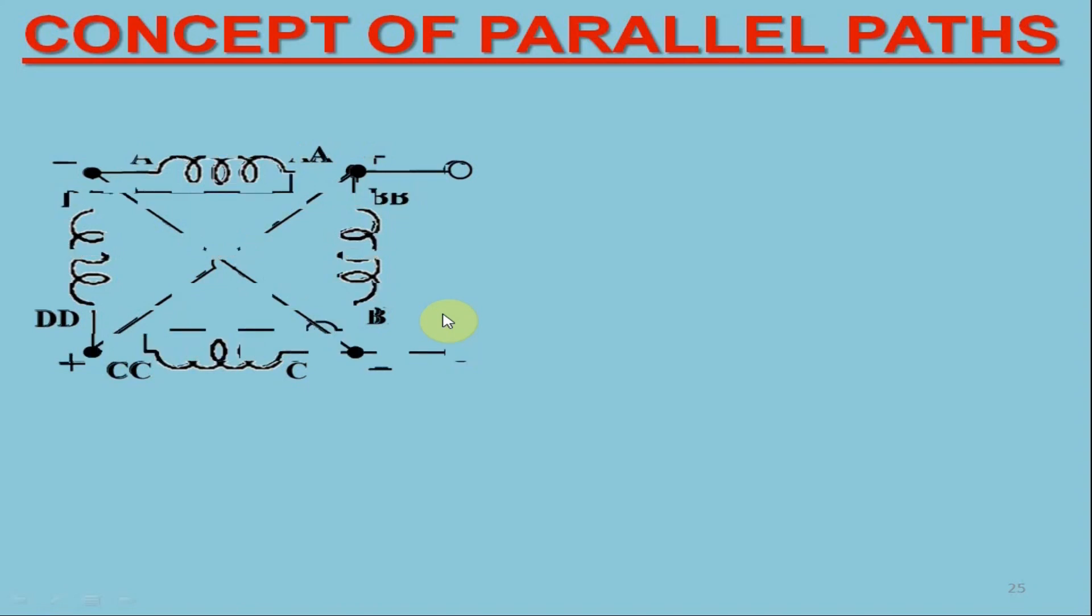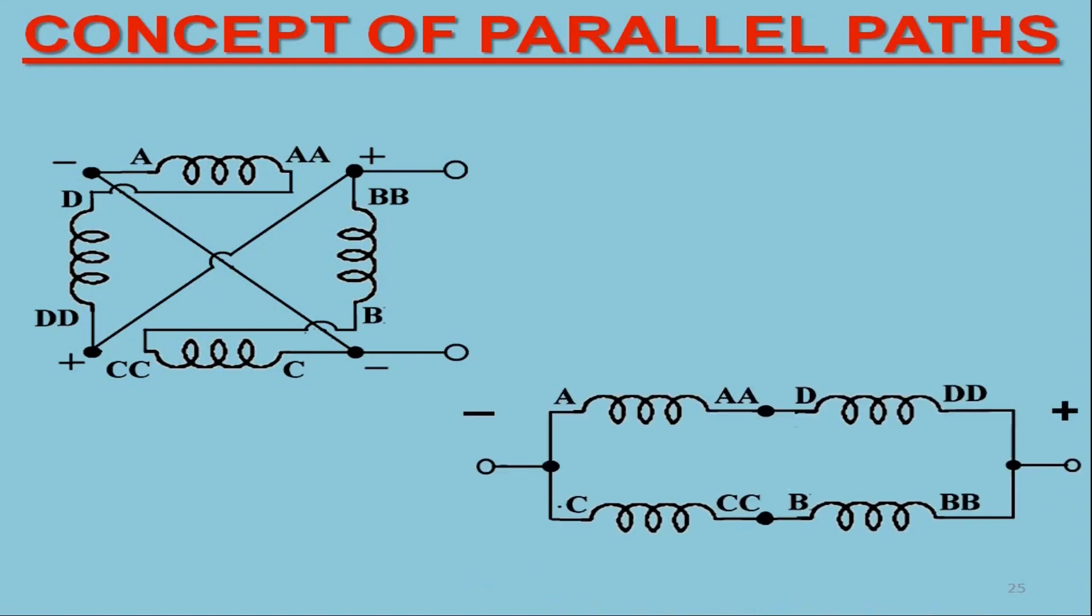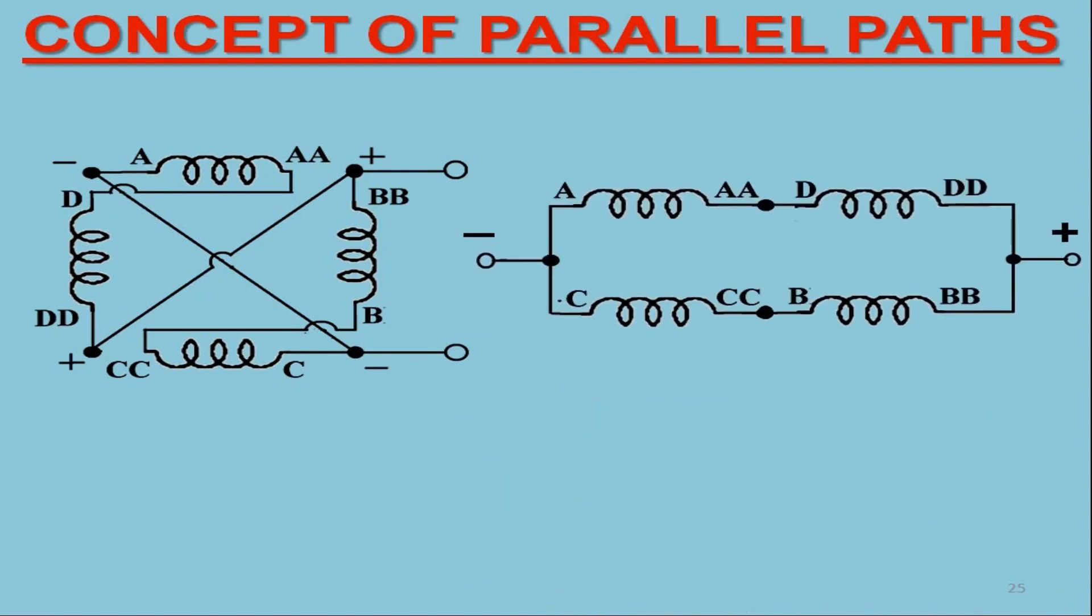After this, the coil ends are connected in such a manner as illustrated on your screen now. The armature circuitry has been rearranged on the right side wherein you may verify that the coil end AA is connected to the coil end D and the coil end CC is connected to coil end B.